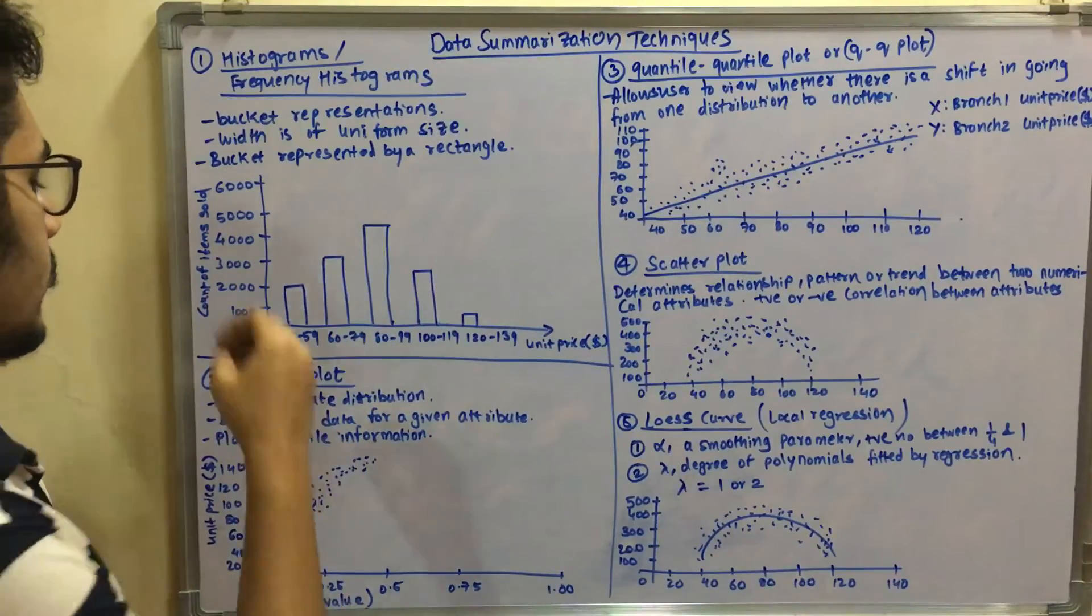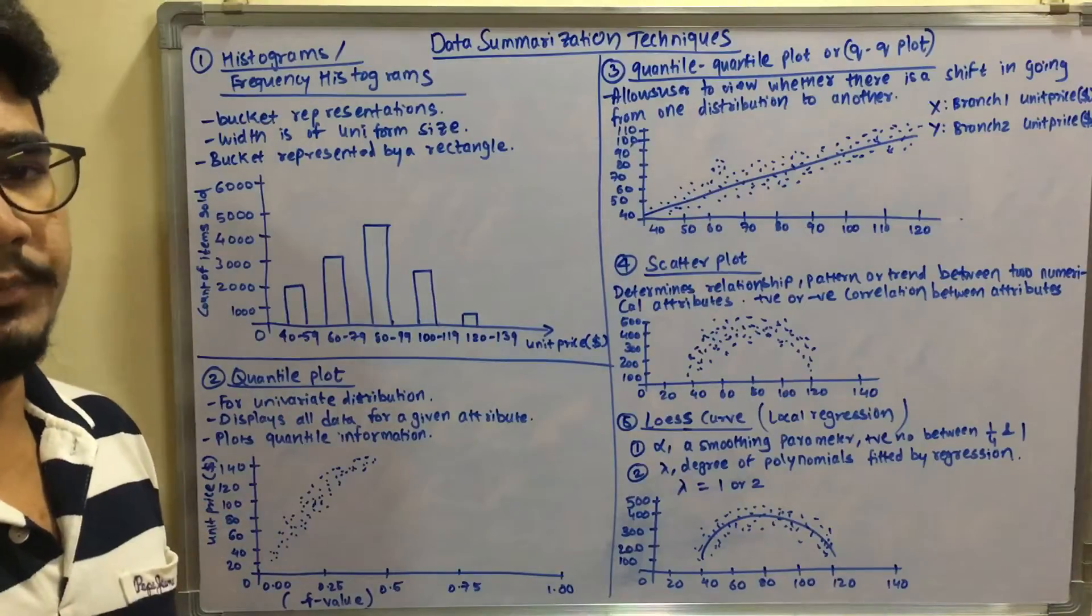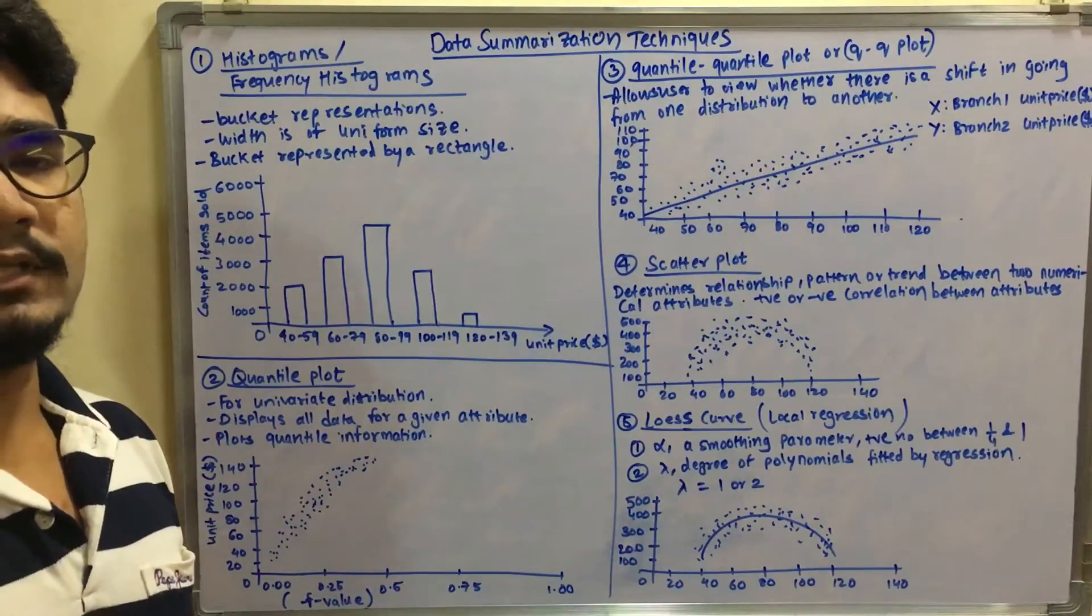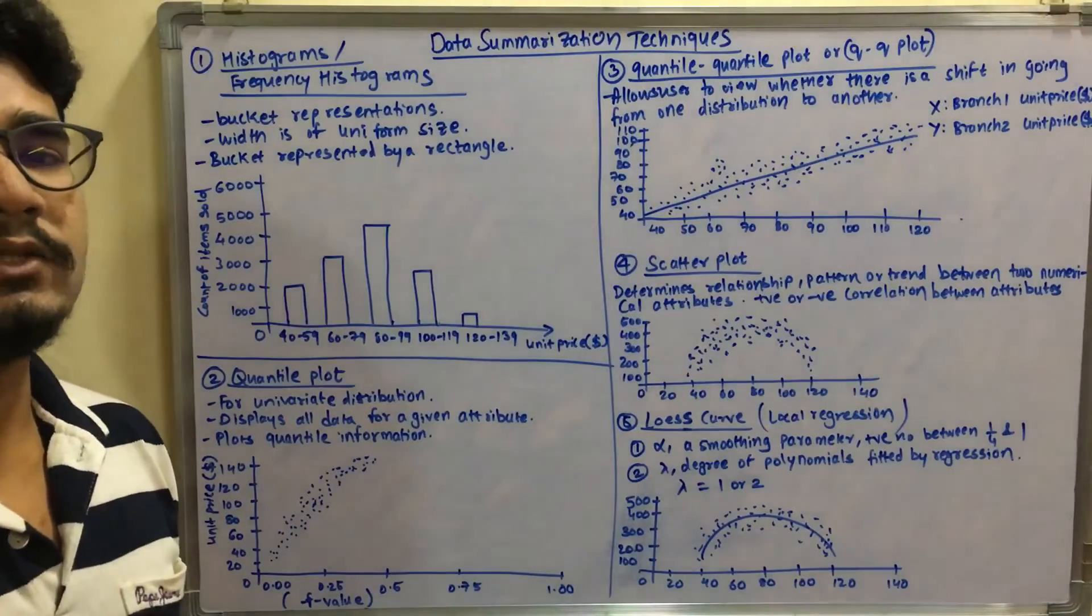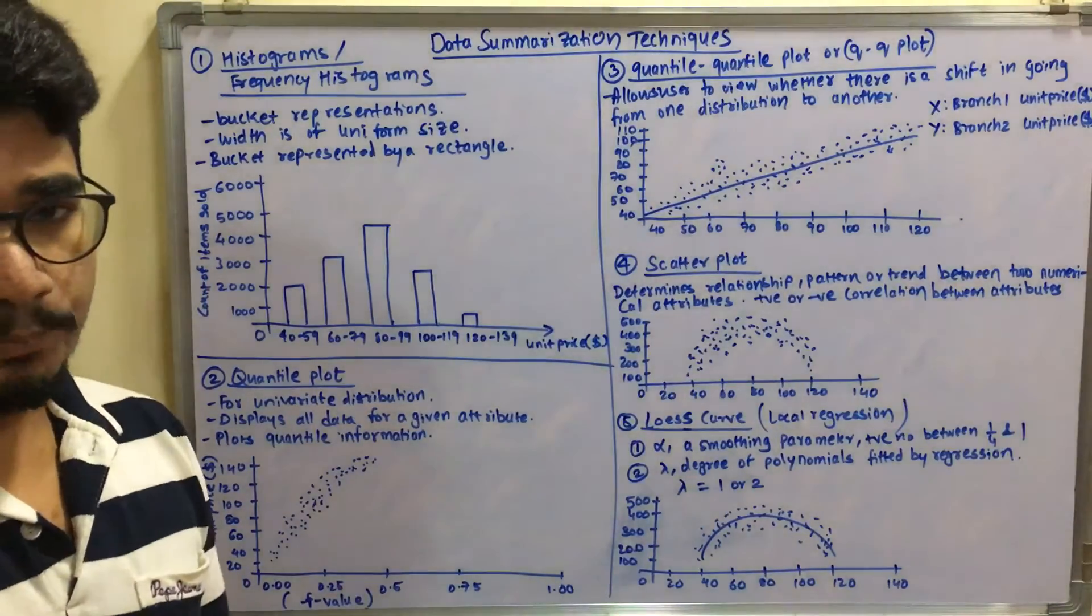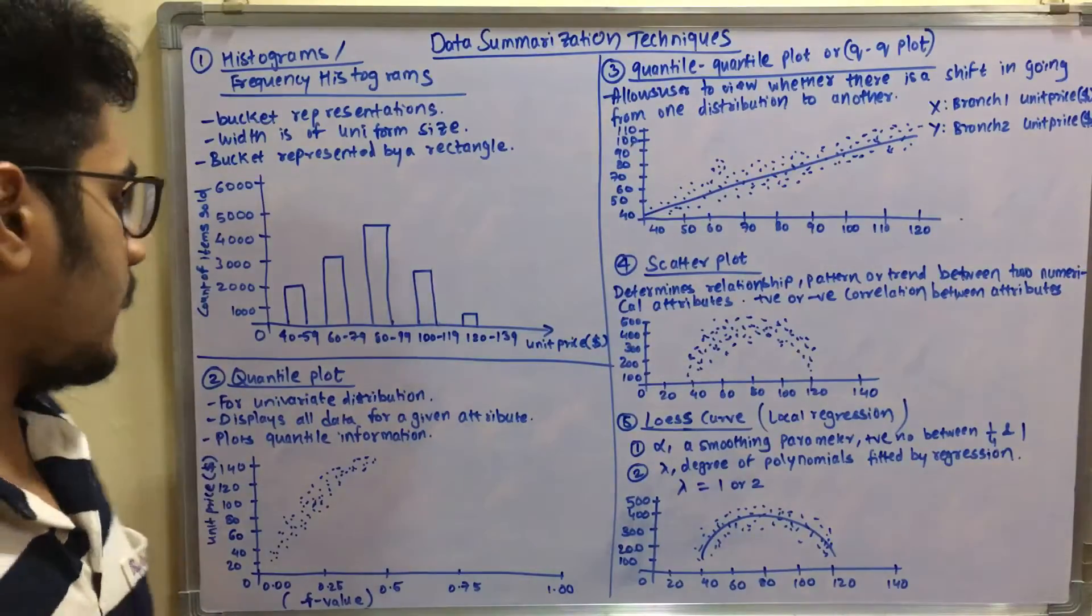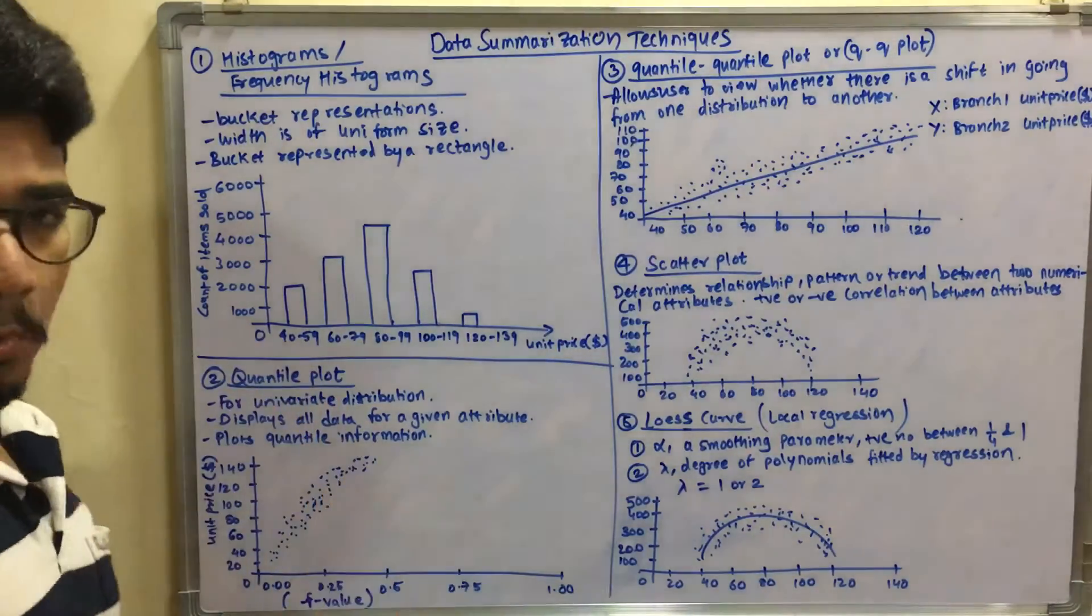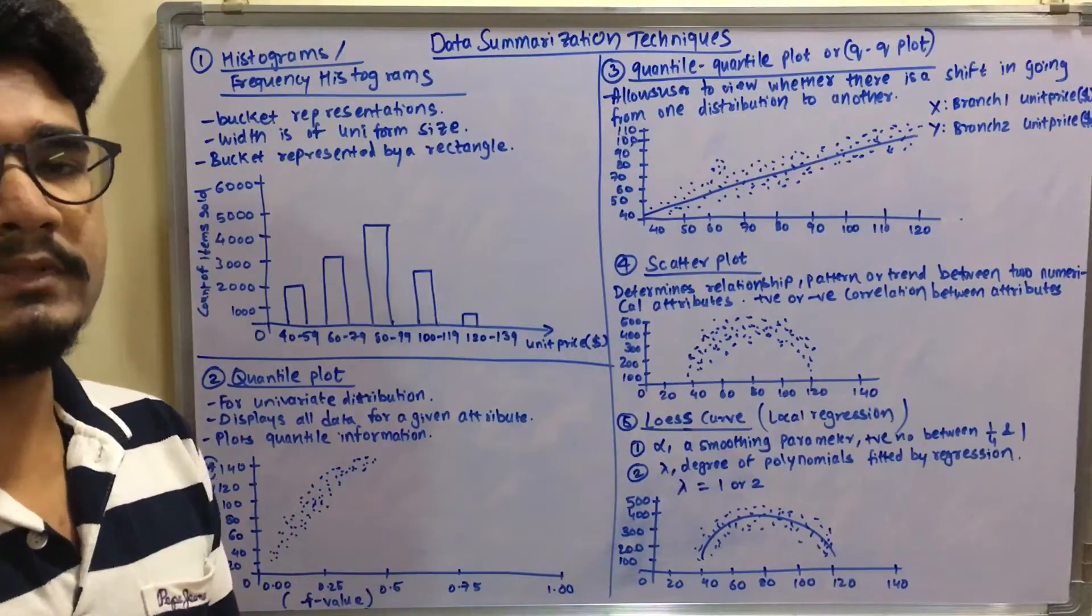Next we have the quantile plot. So this is mainly used for univariate distribution. Univariate means a kind of particular dataset is given that will have different kinds of variety of information or properties exhibiting. So for that kind of data, we mainly use a quantile plot. So it displays all the data for a given attribute.